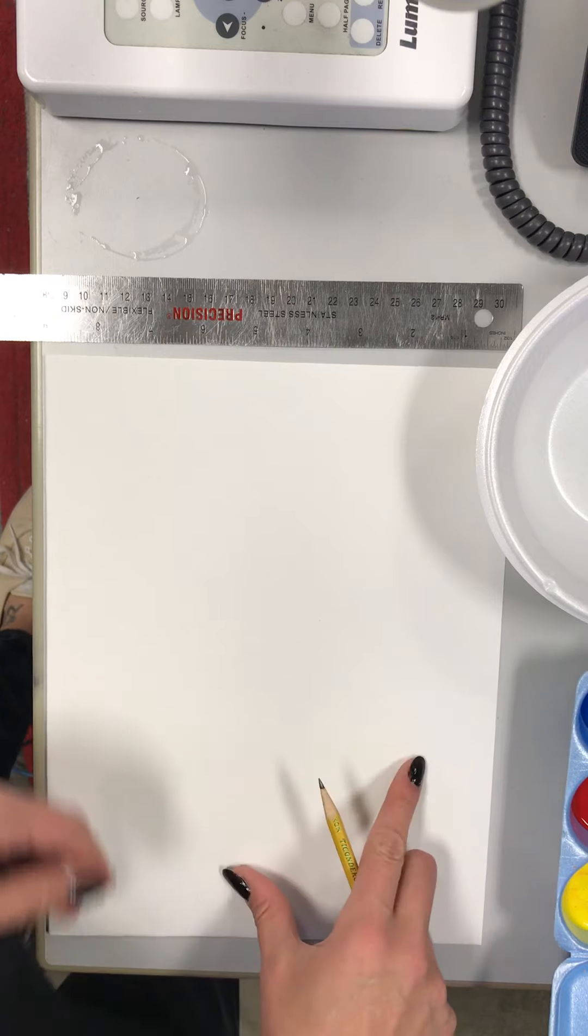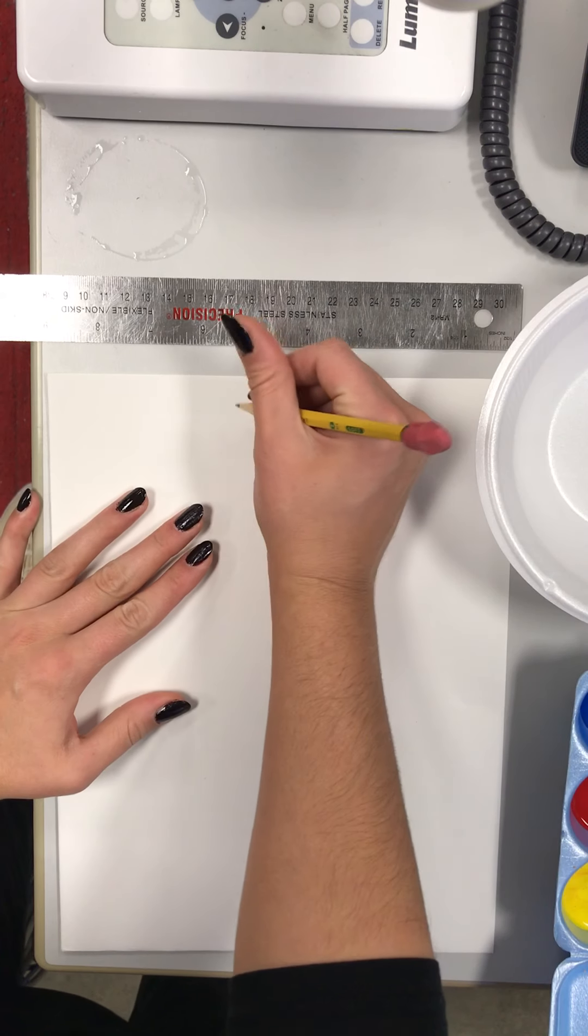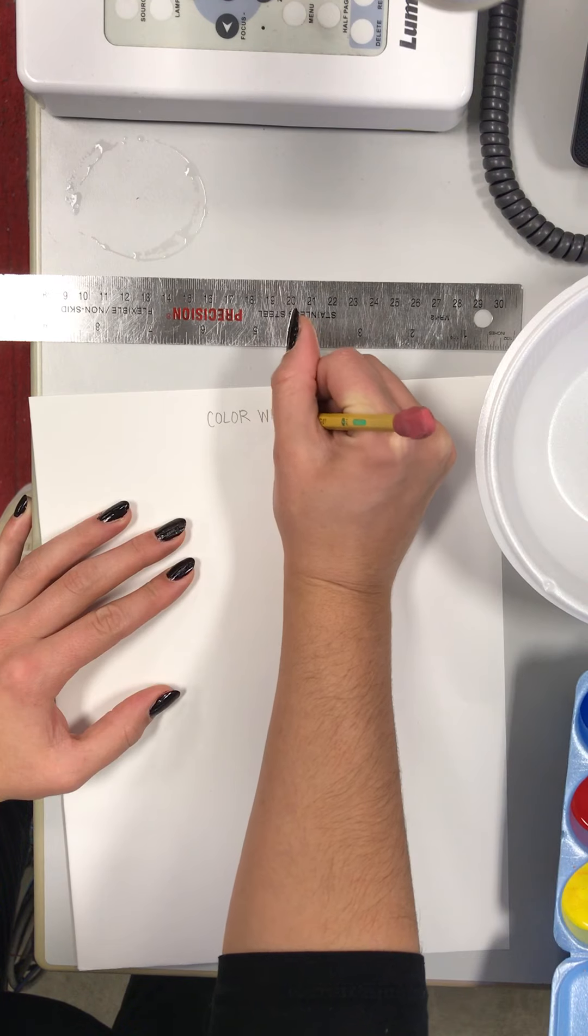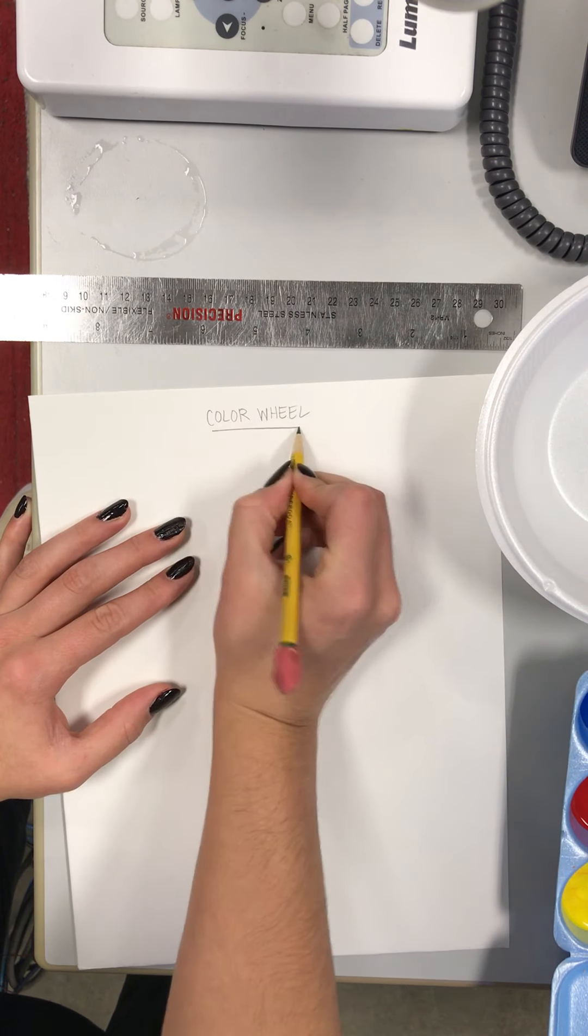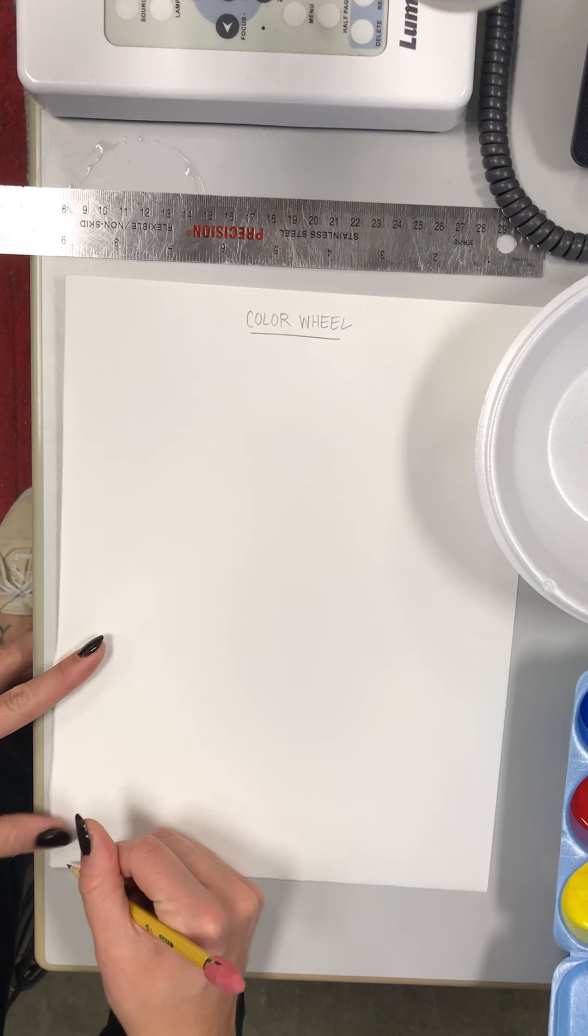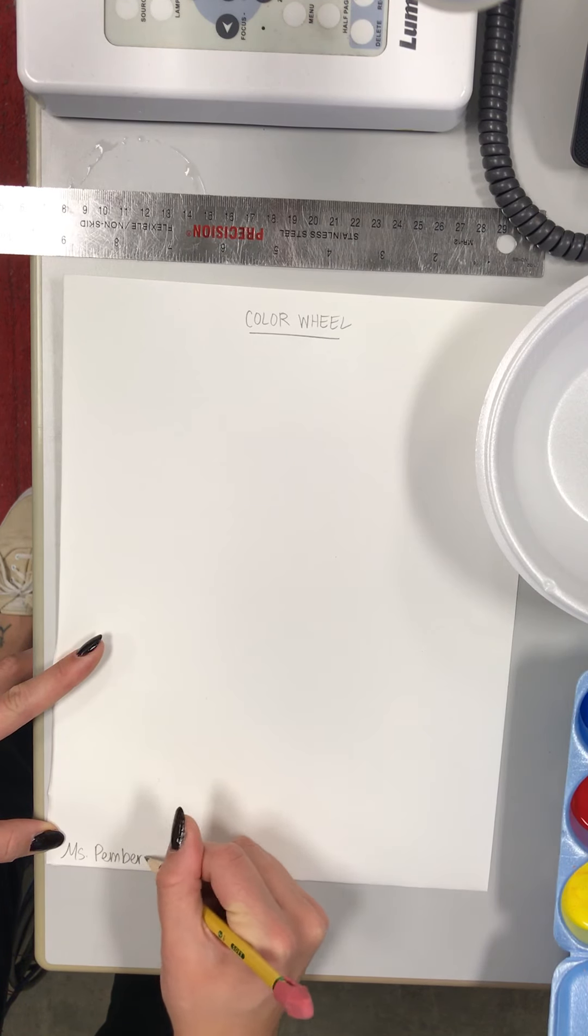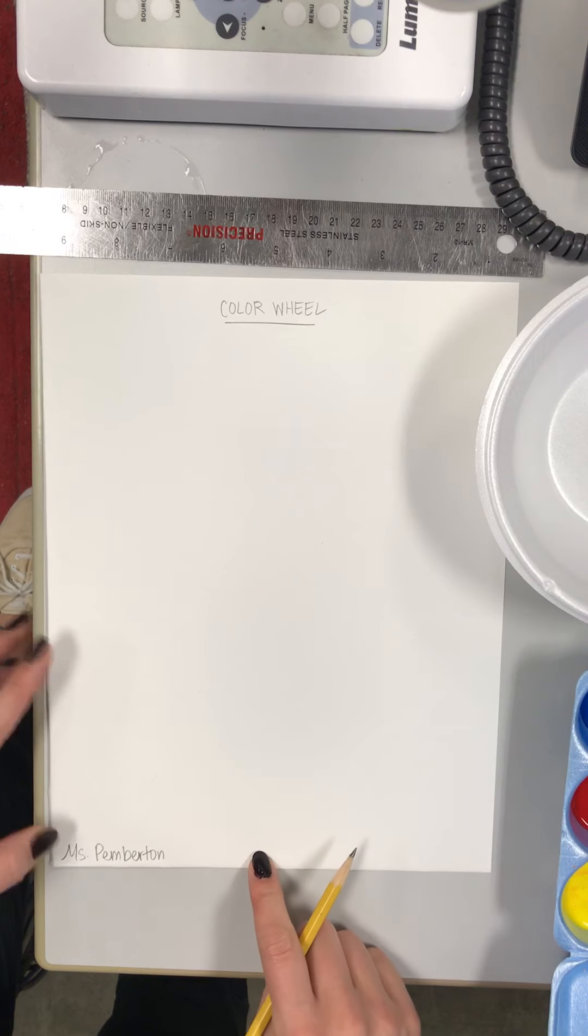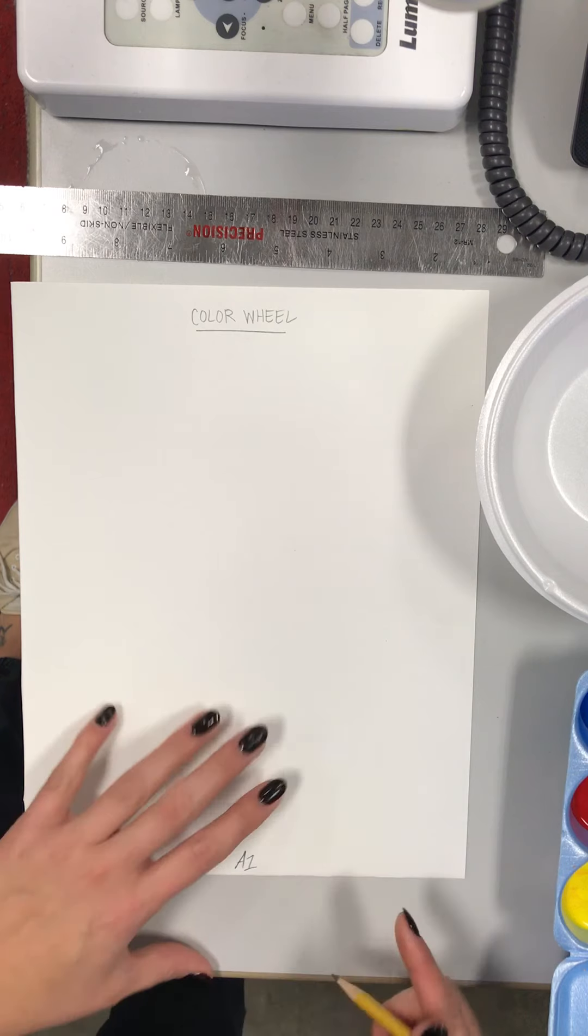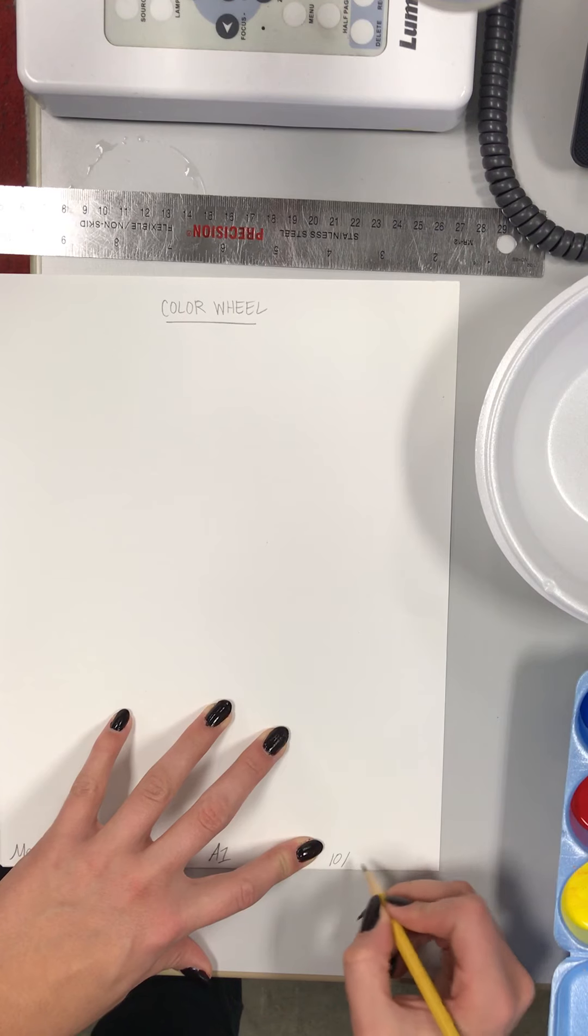First thing, put a title at the top of your paper: Color Wheel. Just like that. And then at the bottom I'd like you to put your name. I'm gonna put my name, but please put your name. And go ahead and put what block you're in, so I'm just gonna put a one, but put whatever block you're in. And then put the date. Today is the 19th of October. Excellent.